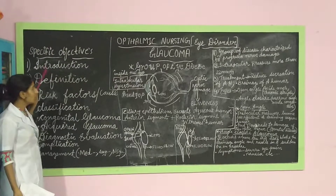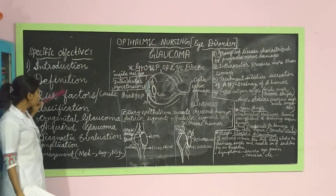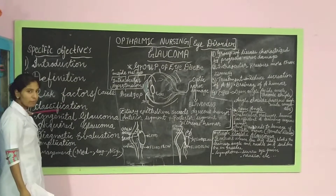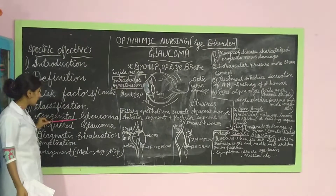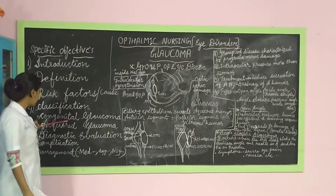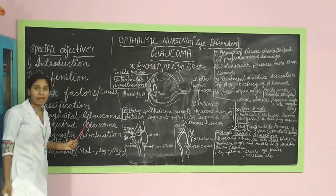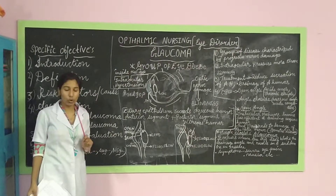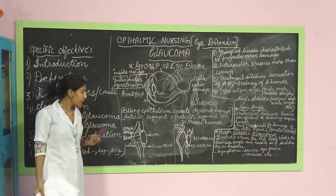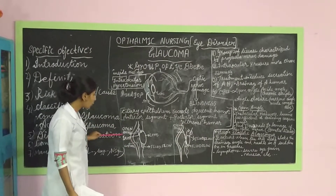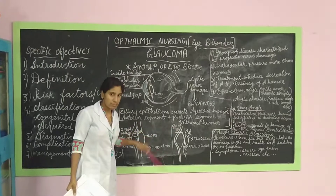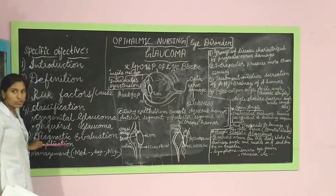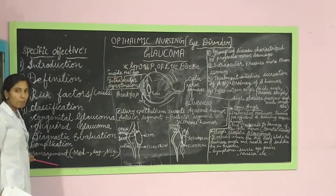First one is the introduction. Second we will see the definition. After that risk factors or causes. Then classification of Glaucoma — under classification we will see congenital Glaucoma and acquired Glaucoma. Under acquired Glaucoma, we will see primary Glaucoma and secondary Glaucoma. Under primary Glaucoma, open angle Glaucoma and closed angle Glaucoma. After that we will see the diagnostic evaluation, then complication, and last one is the management.